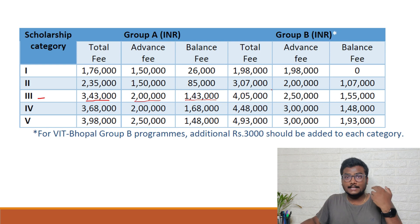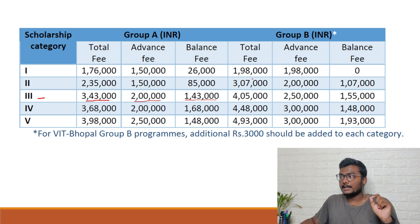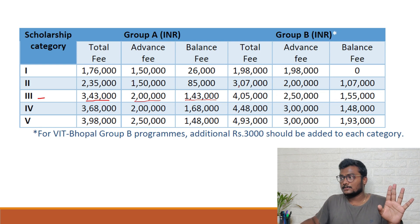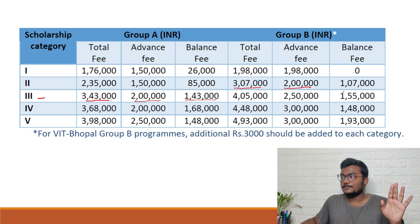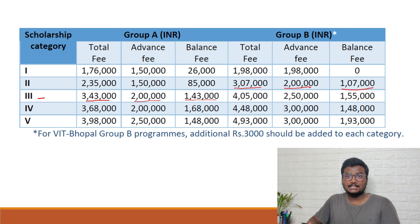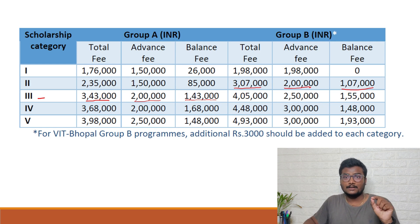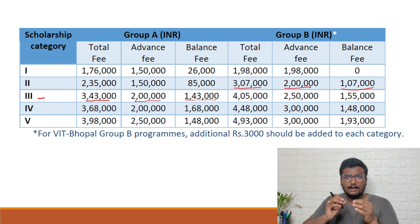For a CSC-related course, which falls under Group B — for example, Category 2 at VIT AP — the total fee is 3 lakhs 7,000 rupees. You have to pay 2 lakhs as advance fee, and the balance fee of 1 lakh 7,000 must be paid before 18th August. So depending on your category and branch, the fees will change accordingly and will be shown to you on the dashboard.